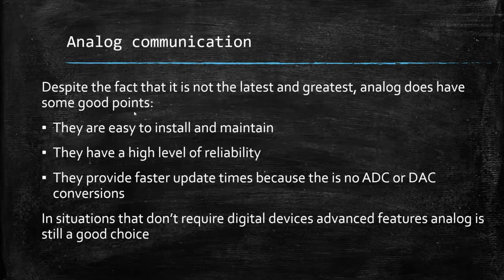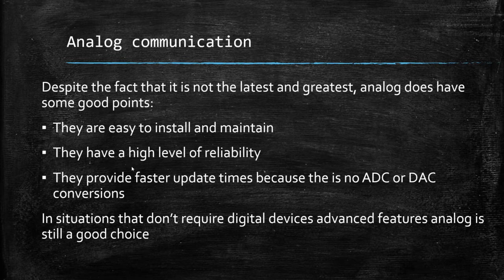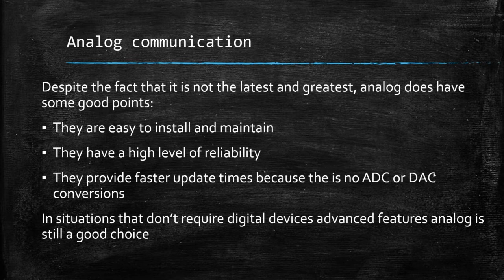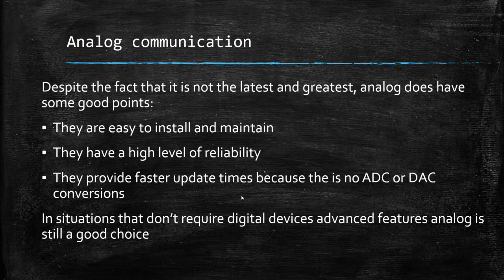Analog communication, despite the fact that it's not the latest and greatest, still has some good points. They are easy to install and maintain — shielded twisted pair is nice, and as long as you can strip some wire and tighten some screws, it's not a big deal. They have a very high level of reliability and provide faster update times. This is probably the biggest significant difference between analog and digital in the context of the ILM. Analog devices are faster because the signal does not have to be converted from analog to digital for processing and then back to analog. Analog is just analog — no conversions at all. So in situations that don't require the advanced features that digital devices have, analog is still a good device.